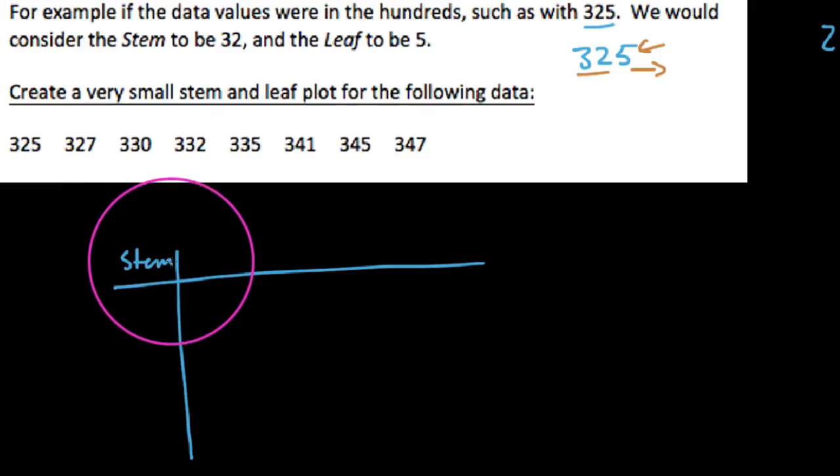Where in the stem, what we're going to do is we're going to put leading digits. So for instance, I see that I have a 32 here. We say 325 would lead with a 32. This would lead with a 32 here, this would lead with a 33.